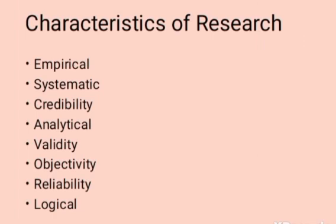If your research is based on observation and experimentation, it's called empirical research. Second is systematic research. Your research should be systematic, meaning you must follow the eight steps. According to research methodology, every research must follow those eight steps. Next is credibility.